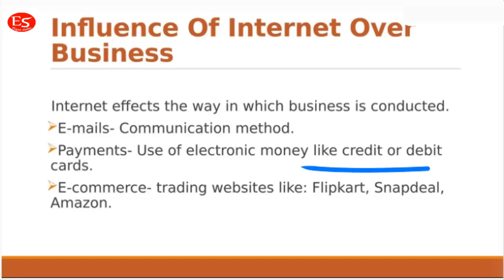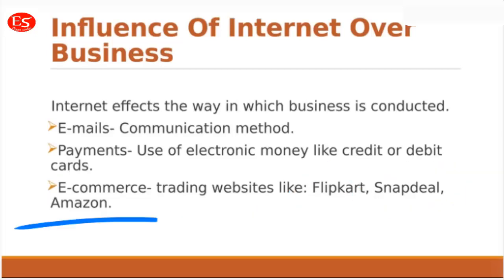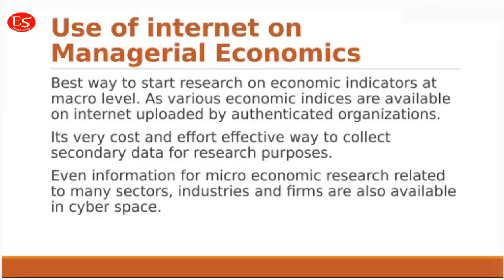The third aspect is e-commerce — trading websites like Flipkart, Snapdeal, and Amazon. The culture of trading has changed over time: first we had local markets, then supermarkets, then shopping malls, and now the most influential aspect is the online market. Online markets bring together markets throughout the world and give consumers a very good platform to buy products and compare utility according to their needs. This is the use of internet in managerial economics.